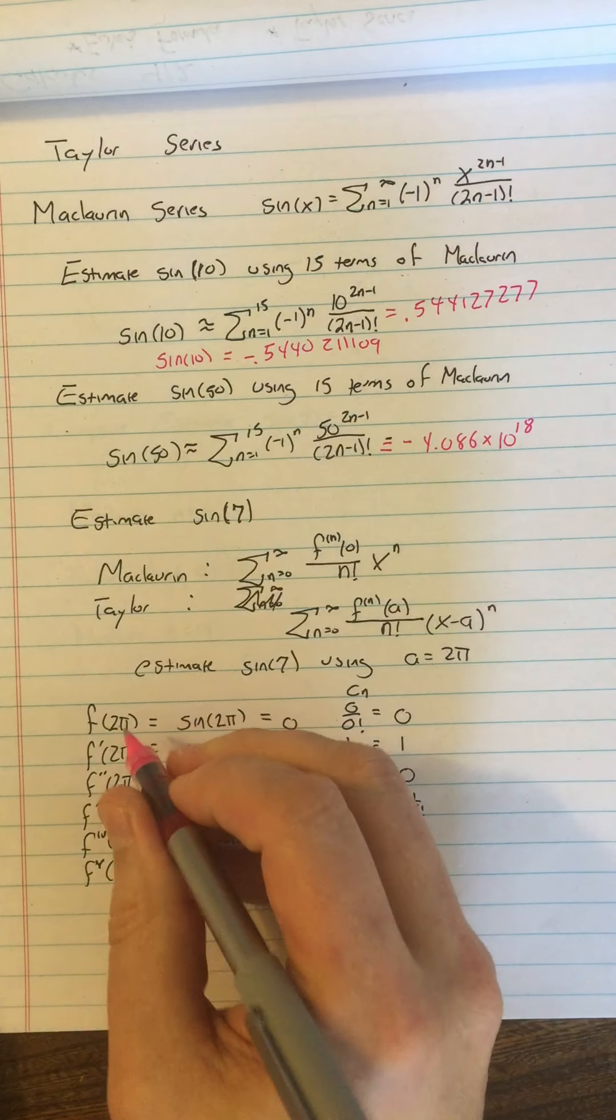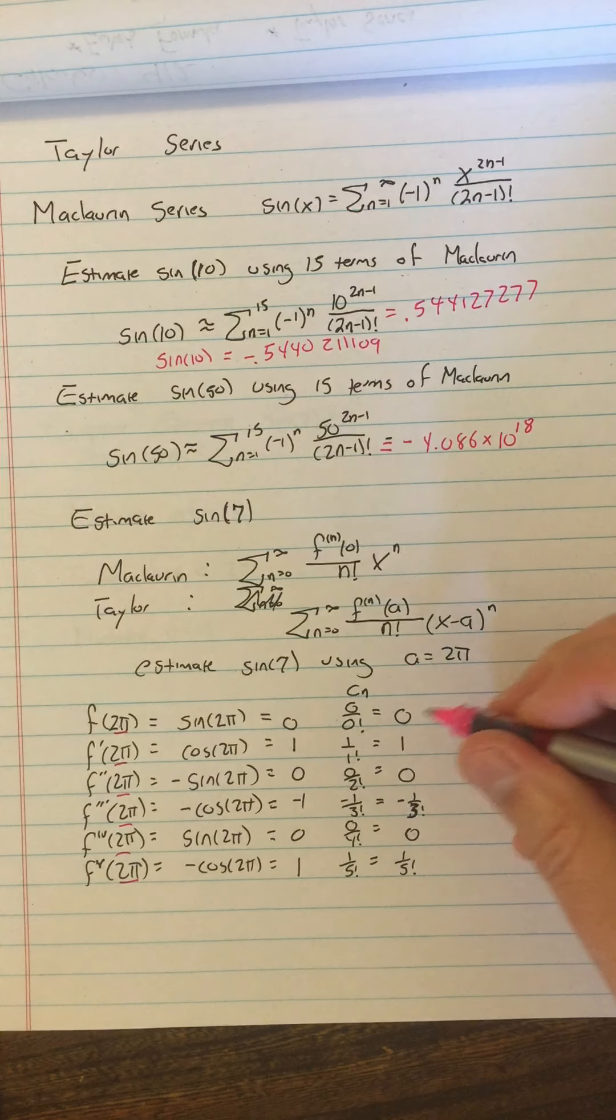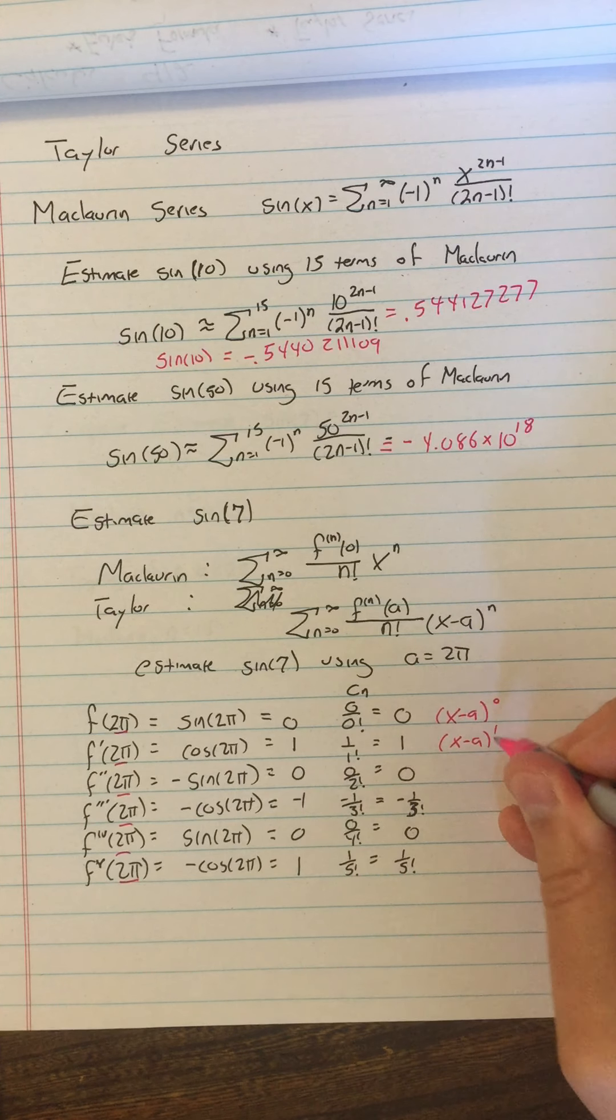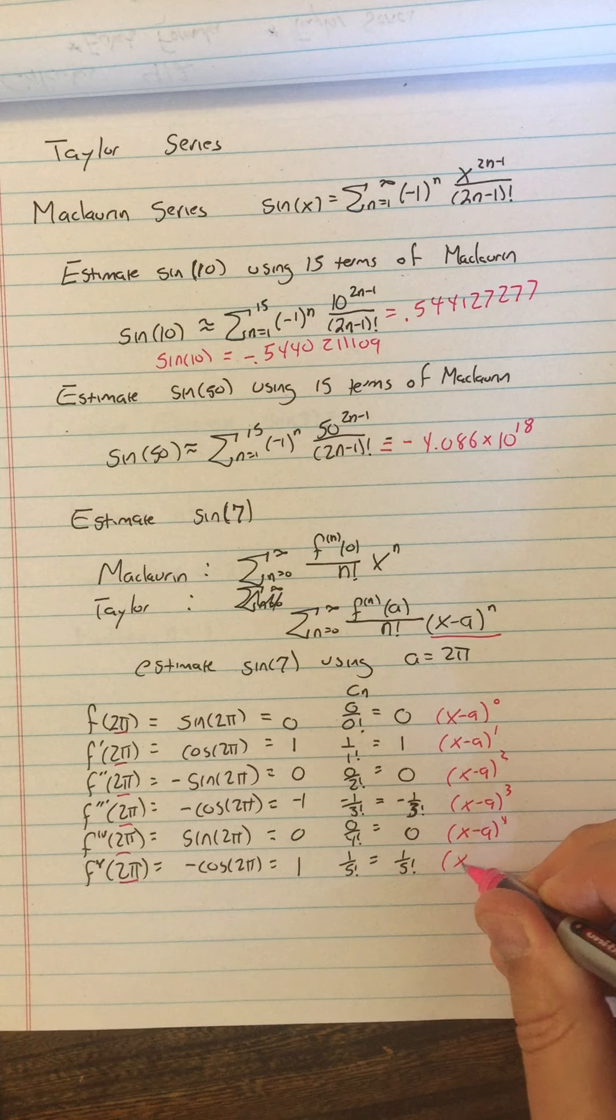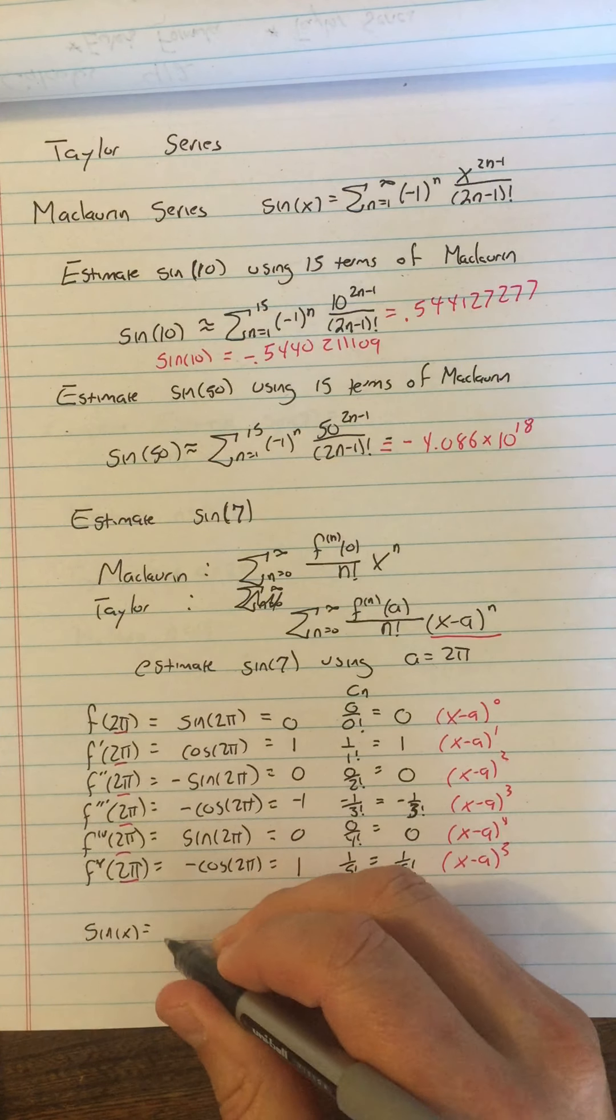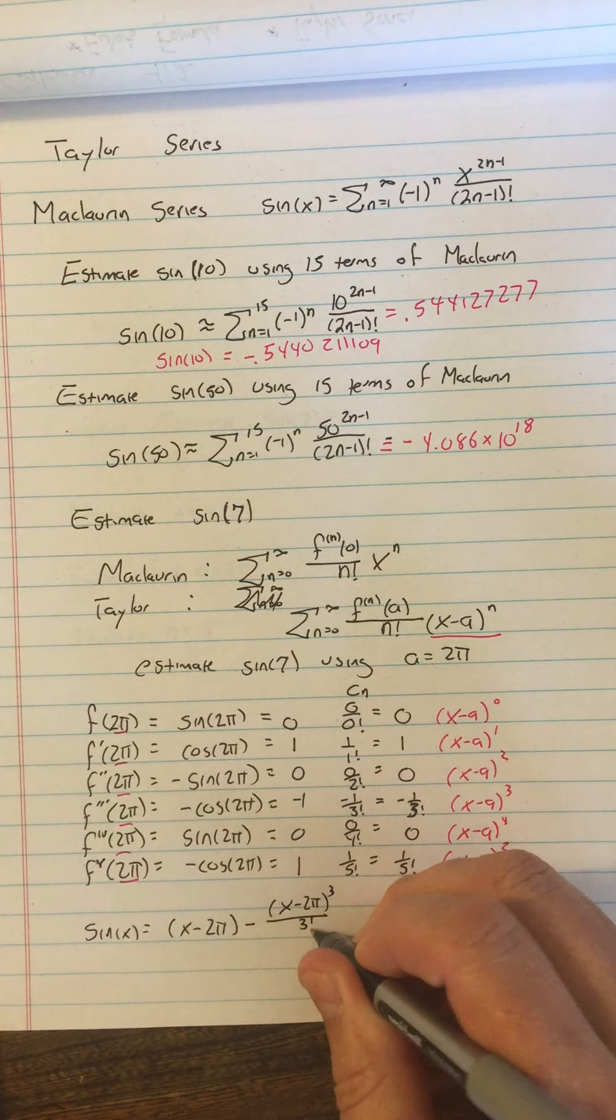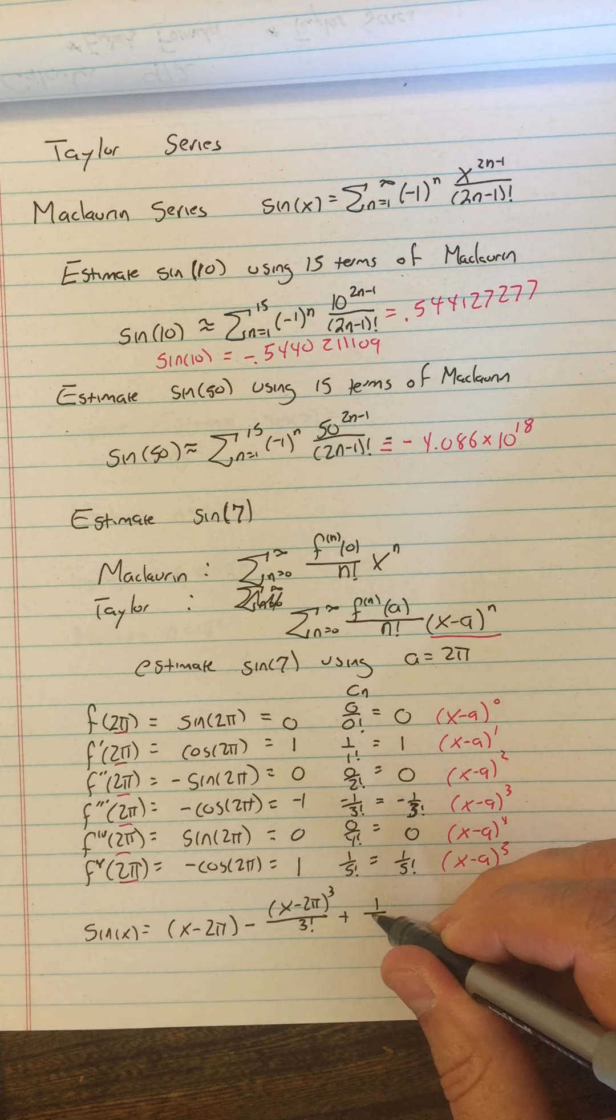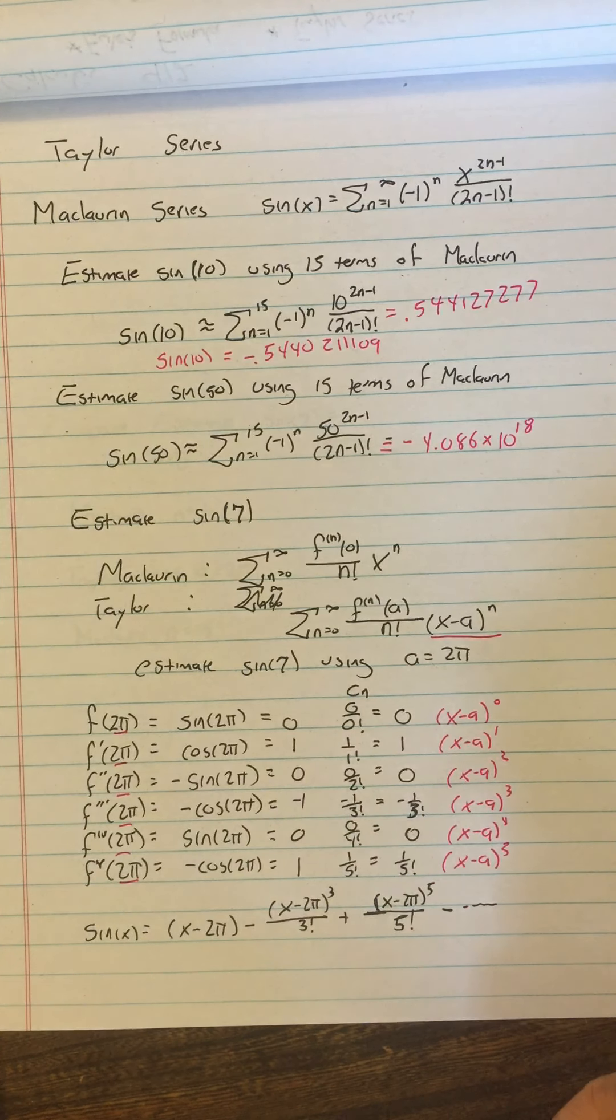Now, here's the second difference. So the first difference between Maclaurin and Taylor is this. We have this a here that's not 0. The second difference is that we don't put just x to the n over here, we put x minus a to the n. So x minus a to the 0, x minus a to the 1st power, x minus a to the 2nd power, this is all coming from here. x minus a to the 3rd power, x minus a to the 4th power, x minus a to the 5th power.